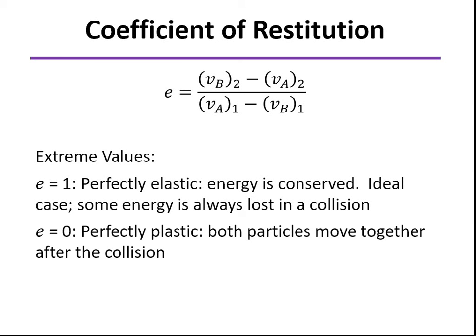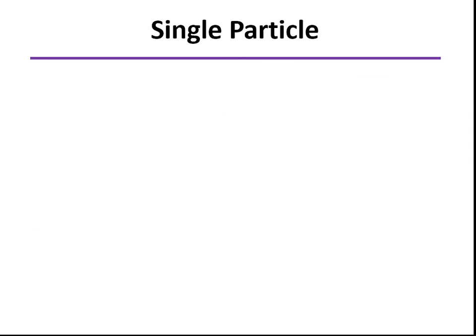On the other extreme, we have a value of zero. If you look at the numerator, if vB2 and vA2 are the same, in other words the two particles move together after the collision, then that corresponds to a coefficient of restitution equal to zero.